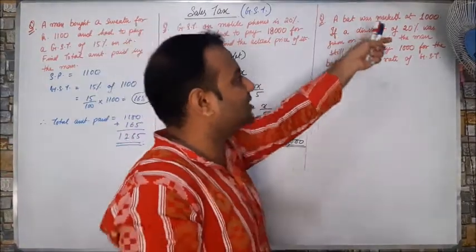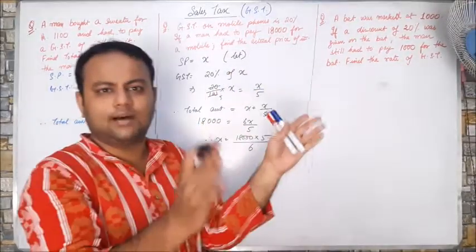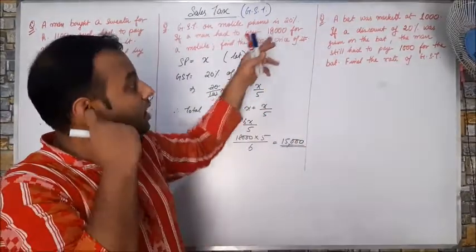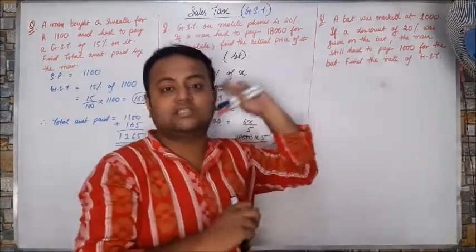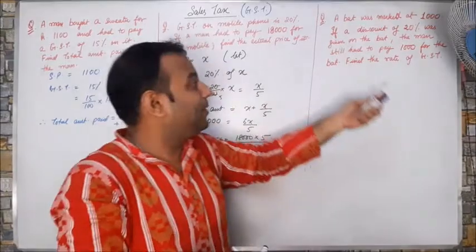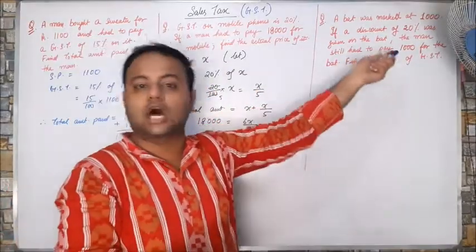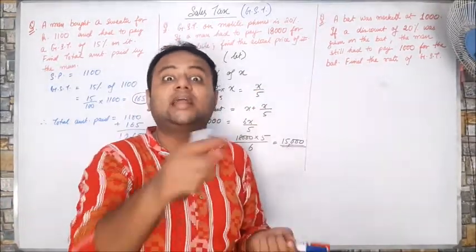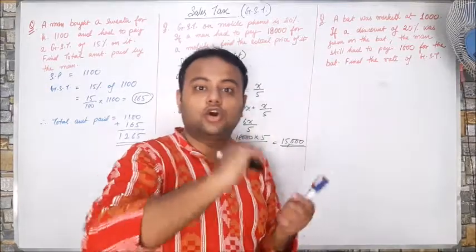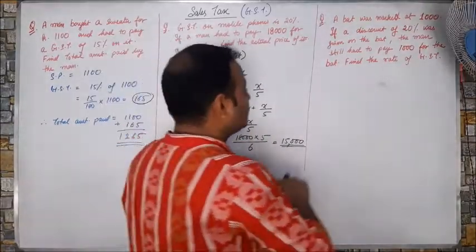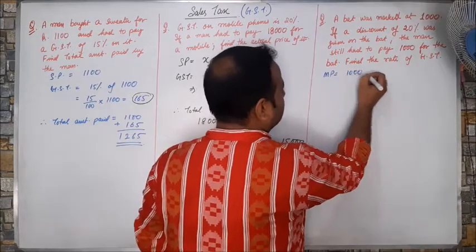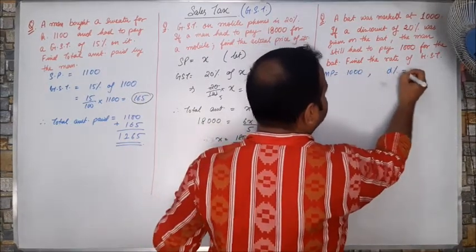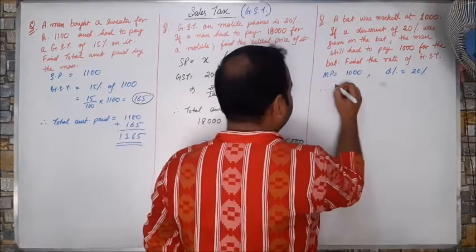Next, a bed was marked at 1000. If a discount of 20% was given on the bed. But still the man had to pay 1000. So here it is given MP. MP is 1000. The discount percent is 20%.